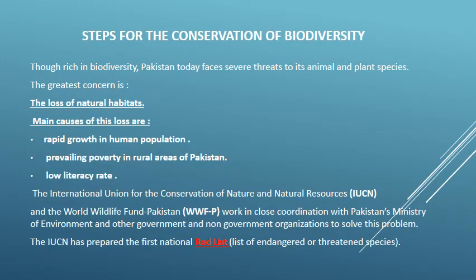Though rich in biodiversity, Pakistan today faces severe threats to its animal and plant species. The greatest concern is the loss of natural habitats. Main causes are rapid growth in human population, prevailing poverty in rural areas, and low literacy rate. The International Union for the Conservation of Nature and Natural Resources (IUCN) and the World Wildlife Fund Pakistan (WWF-P) work in close coordination with Pakistan's Ministry of Environment and other government and non-government organizations to solve this problem. The IUCN has prepared the first national red list — the list of endangered or threatened species.